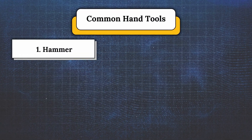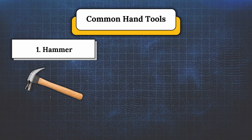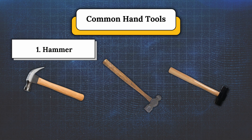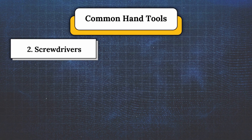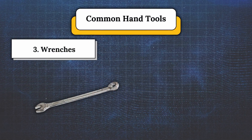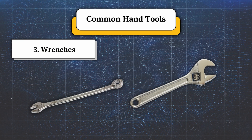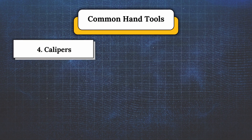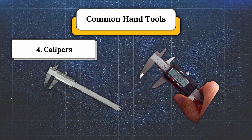For the common hand tools. First, hammer — number one, claw hammer, most used for driving and removing nails. Number two, ball-peen hammer, for peening rivets and shaping metal. Number three, sledgehammer, a heavy-duty hammer for more significant tasks. Second, screwdrivers — number one, flathead screwdriver, for slotted screws. Number two, Phillips screwdriver, cross-shaped, for Phillips screws. Third, wrenches — number one, open-end and box-end wrenches, for nuts and bolts. Number two, adjustable wrench, jaws can be adjusted for various sizes. Fourth, calipers — number one, vernier caliper, offers precision measurements. Number two, digital caliper, provides digital reading.